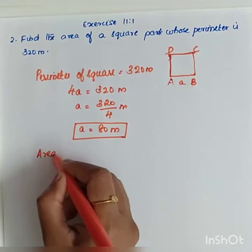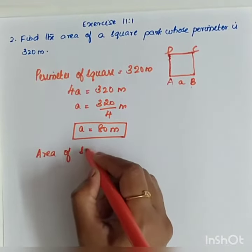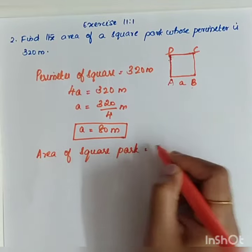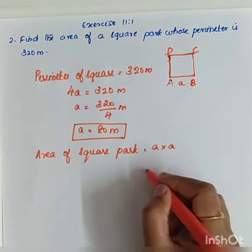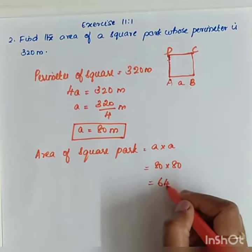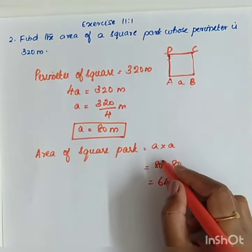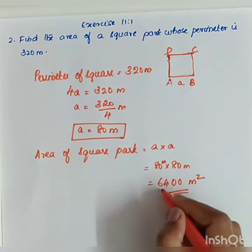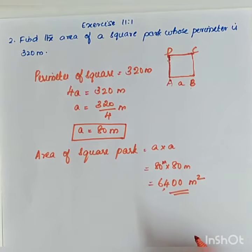side, can we find the area? The area of the square park is equal to a times a, right? So 80 times 80. 8 times 8 is 64, plus two zeros. 80 meters times 80 meters equals meter square, so it is 6400 meter square.